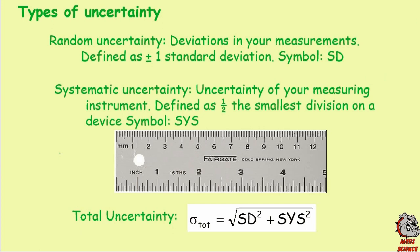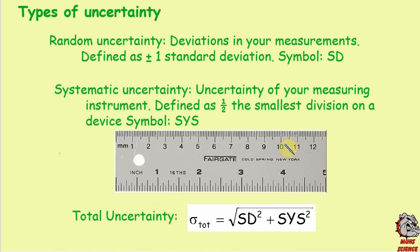You take one half of the smallest division, and that's your systematic uncertainty. For the inches side, the markings are in sixteenths of an inch, so half of that would be one thirty-second of an inch. This also applies to scales — if you have a digital scale, the uncertainty is generally the smallest readable amount, and sometimes you have to look up the manual of your device to find its systematic uncertainty.